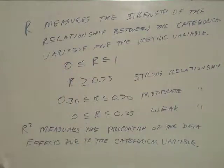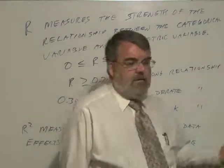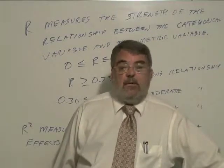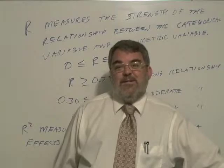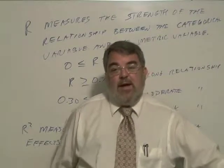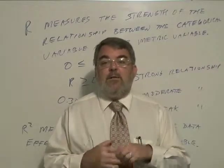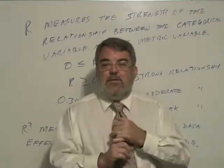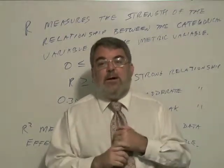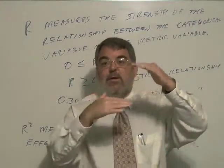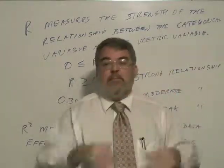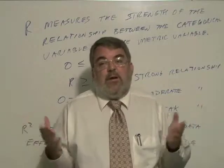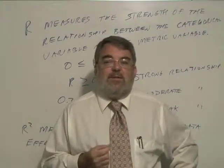R and R squared are important measures of this relationship. The hypothesis test simply measures whether we have a difference between categories — are these categories significantly different? That's when you reject the null hypothesis and the p-value is very small. Rejecting the null hypothesis means there are at least two groups that are significantly different from one another. If you fail to reject, the differences seen are considered due to random effects and are not statistically significant.